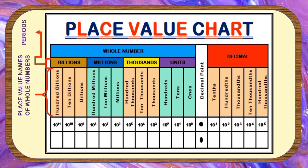This part is for the place value names of decimal numbers. They are located at the right side of the decimal point, starting with the tenths place, hundredths, thousandths, and so on.